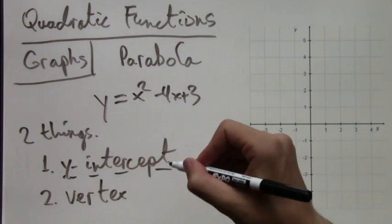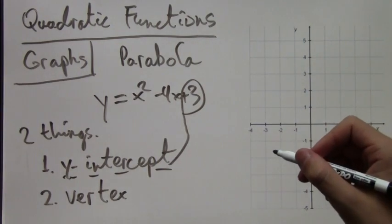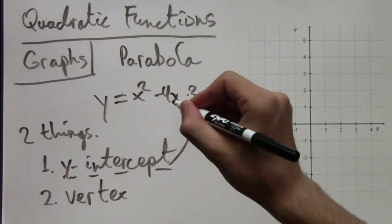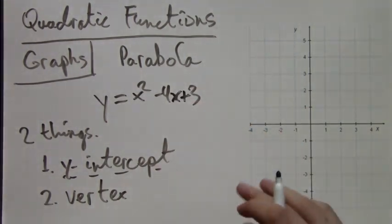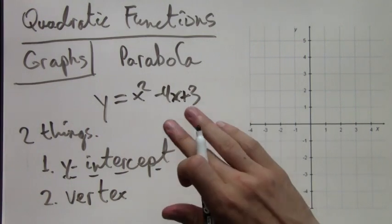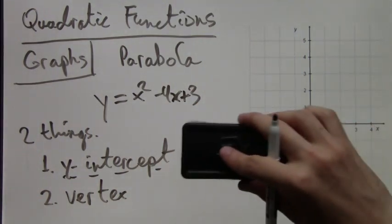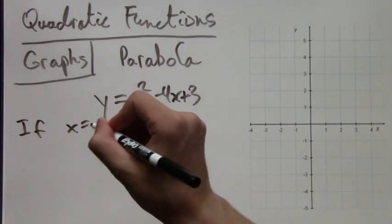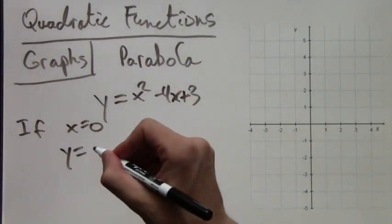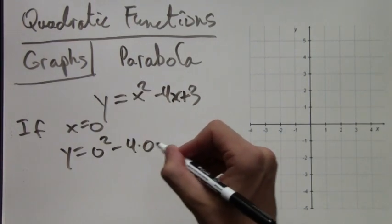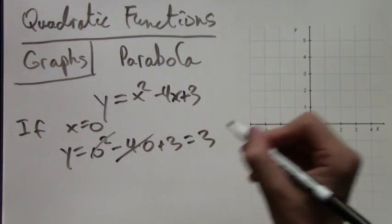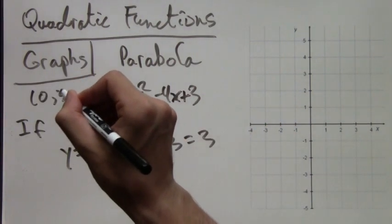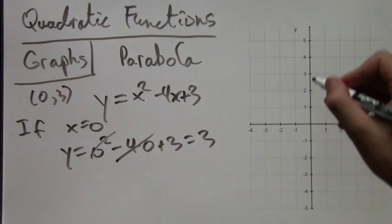We'll start with the y-intercept. The y-intercept is going to be 3. Like in linear functions, it's that constant term that's added on. The reason for this is, if you plug in x equals 0, you get y equals 0 squared, which is 0, minus 4 times 0, which is 0 again, plus 3. So you get 3. This point is on the parabola, and it's the y-intercept. Here I've graphed it now.